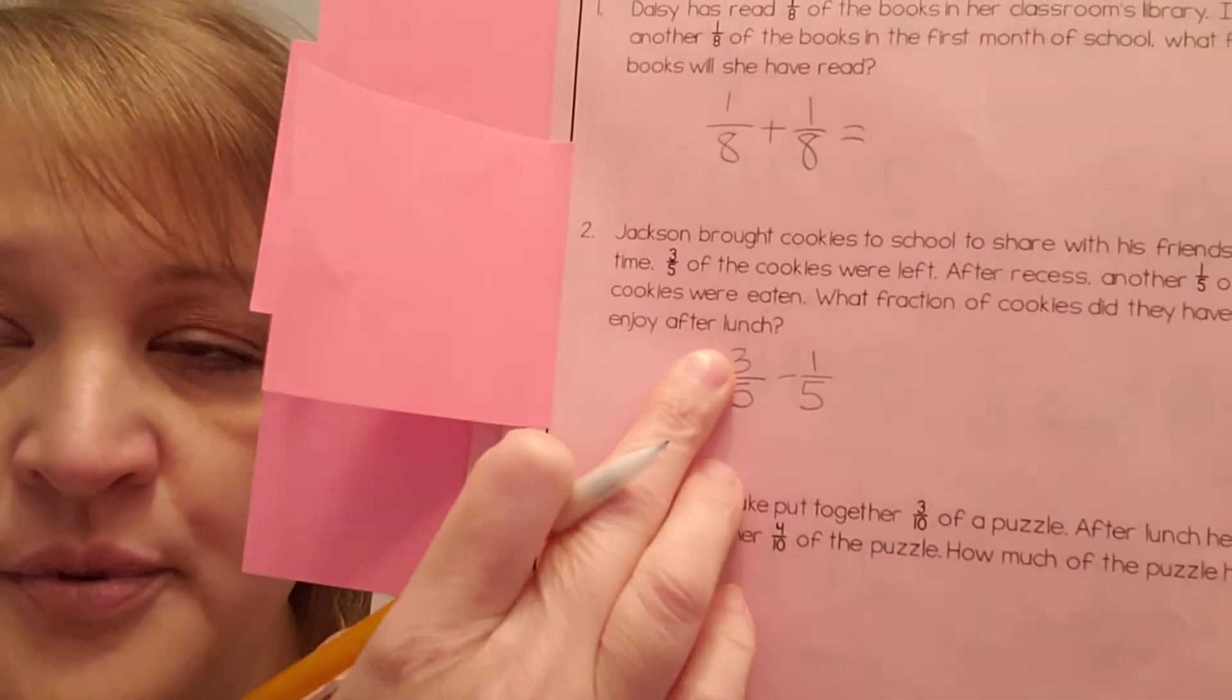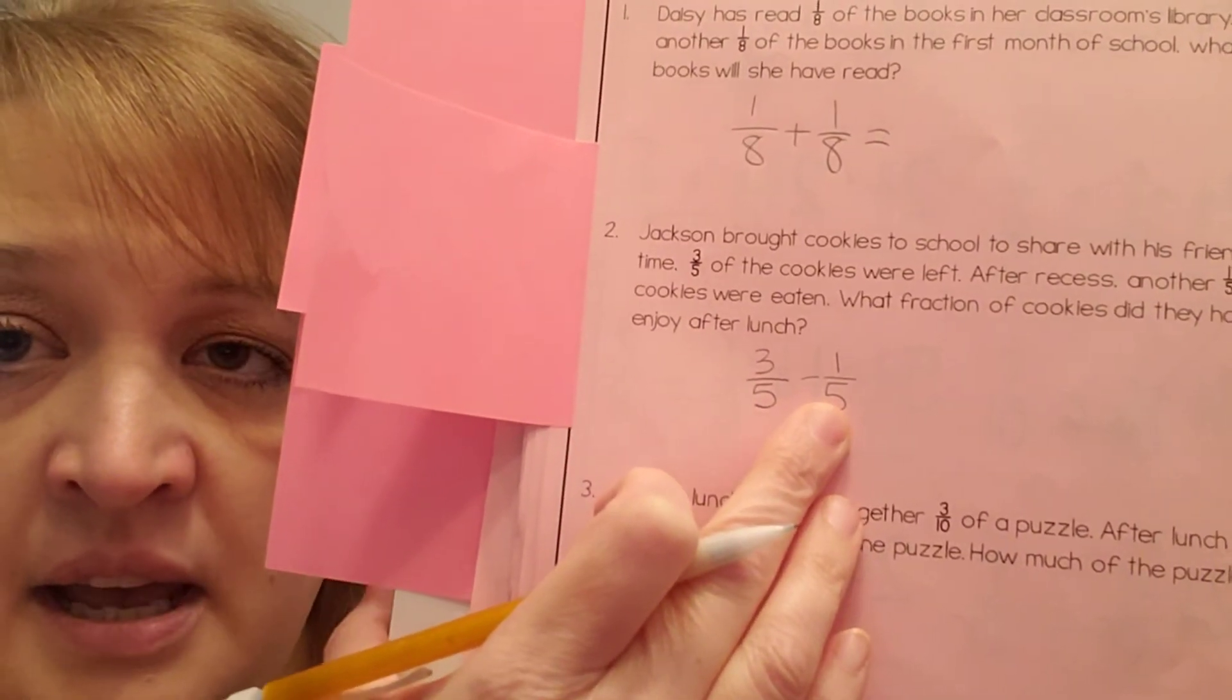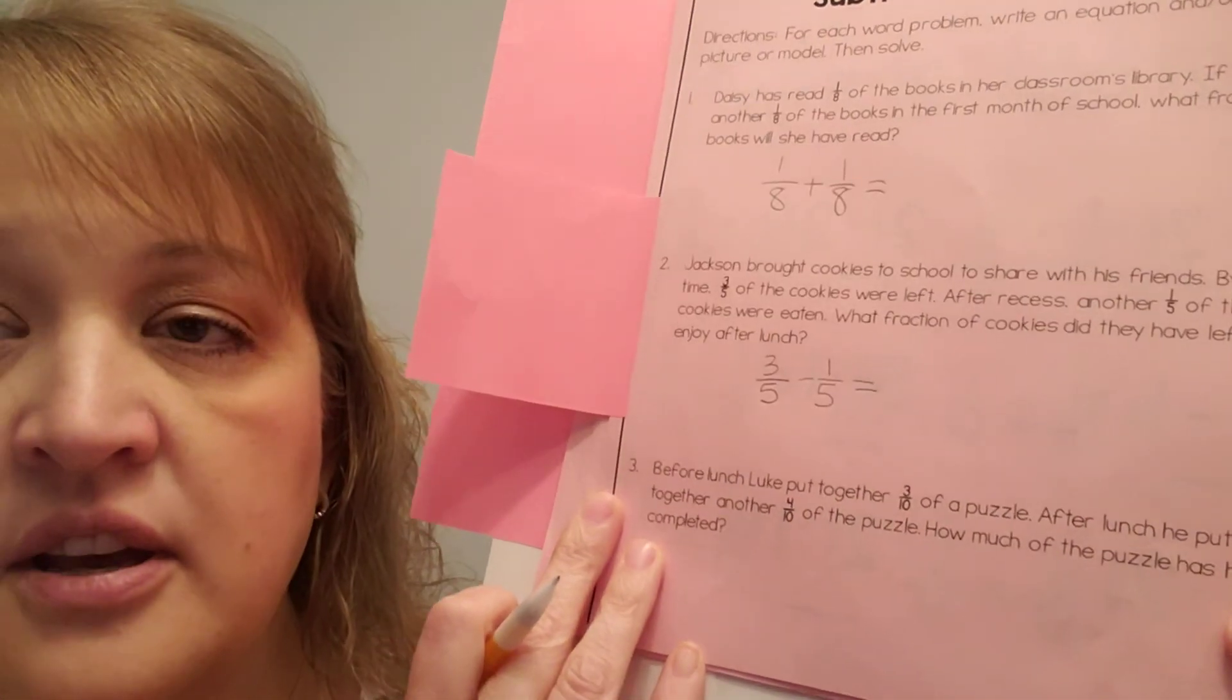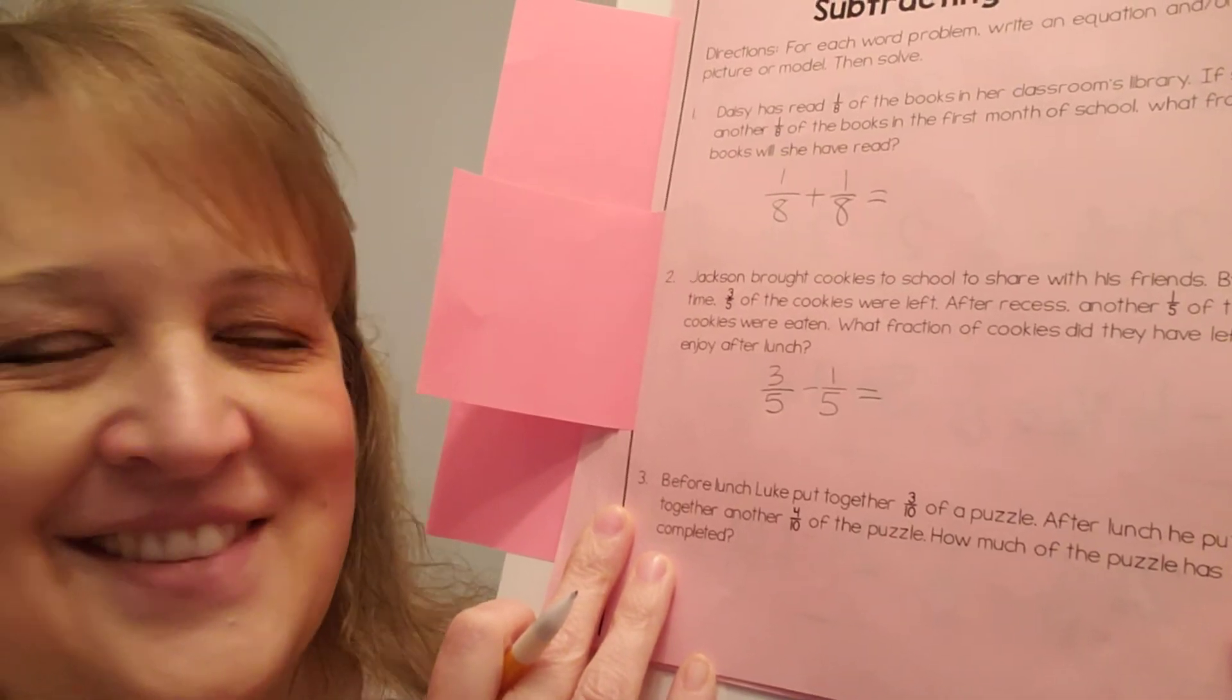All right. Number 2. Jackson brought cookies to school to share with his friends. By recess time, 3 5ths of the cookies were left. After recess, another 1 5th of the cookies were eaten. What fraction of the cookies did they have left to enjoy after lunch? So Jackson brought cookies to school to share with his friends. By recess time, 3 5ths of the cookies were left. So we have 3 5ths that were left. After recess, another 1 5th was eaten. So we had 3 5ths by recess eaten. Another 1 5th is going to be eaten. So what's the fraction that's going to be left for after lunch? And you can solve that.